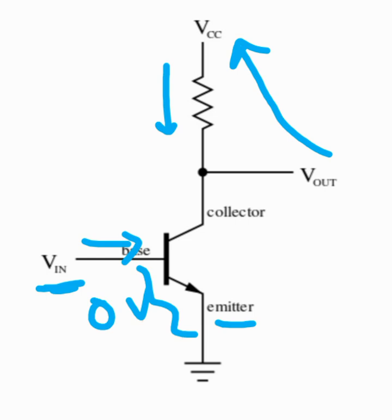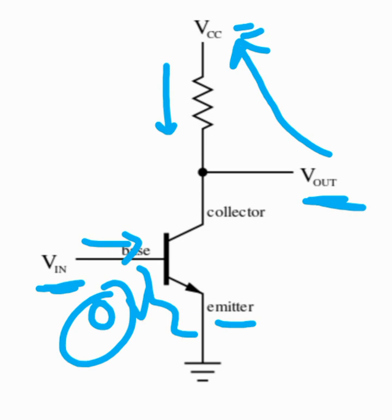With no input current, there is no output current, so essentially your output voltage is tied to VCC. When you have 0 volts at the input, the output is high — that is VCC.